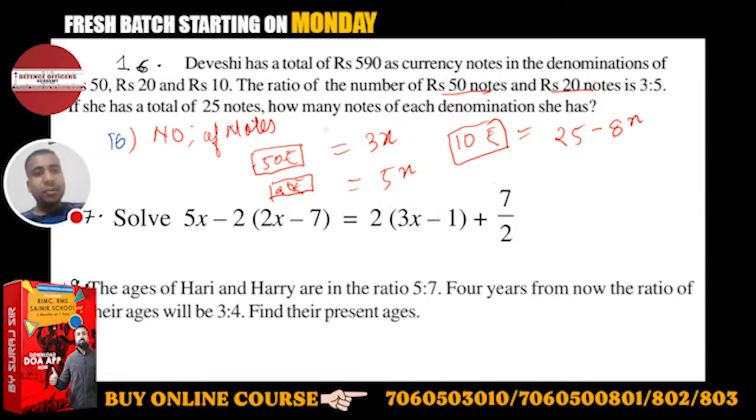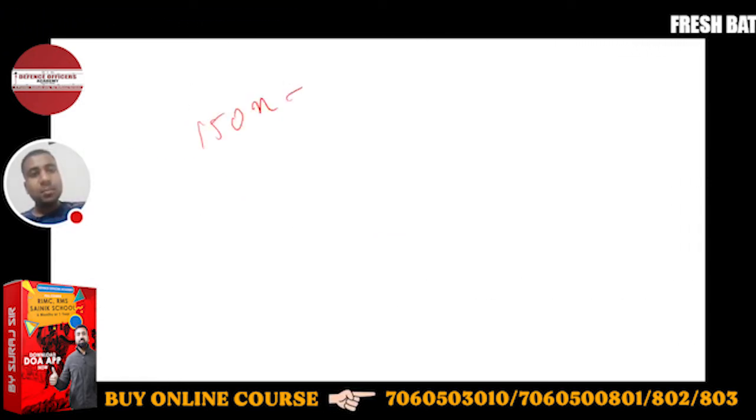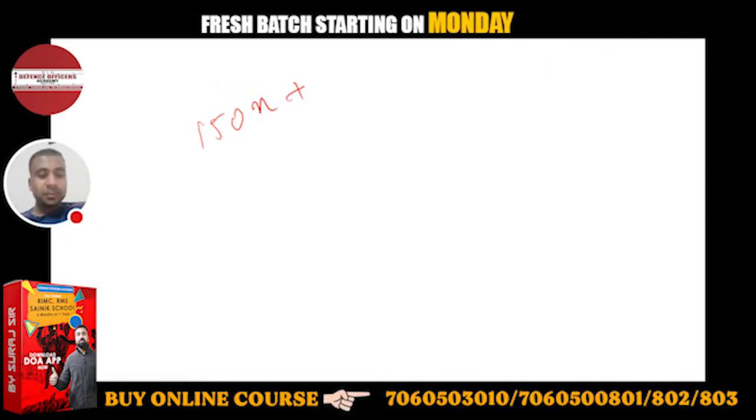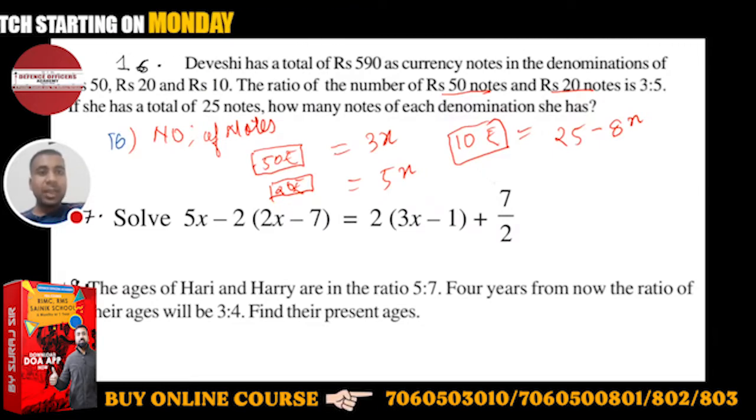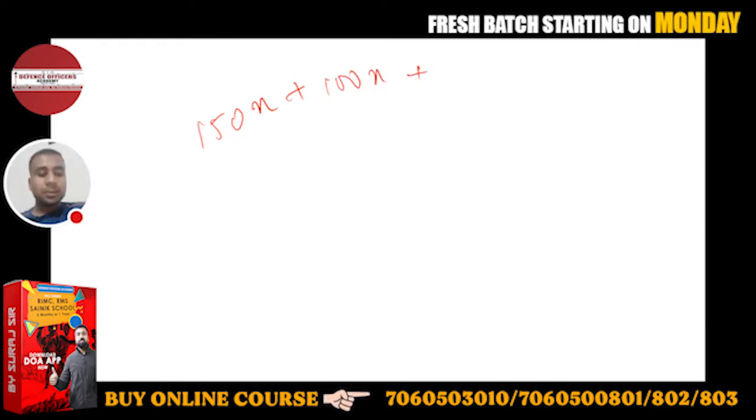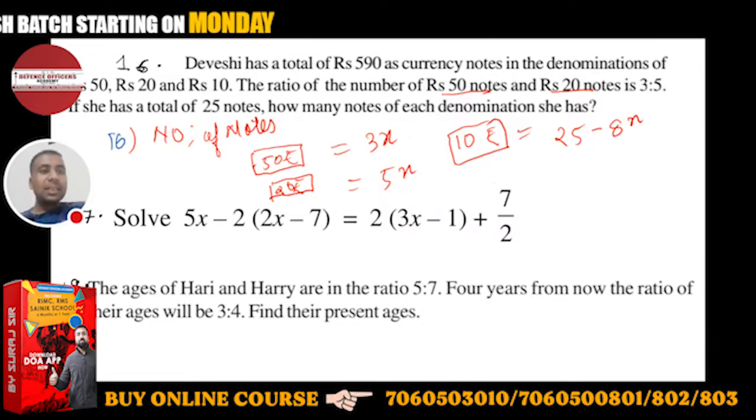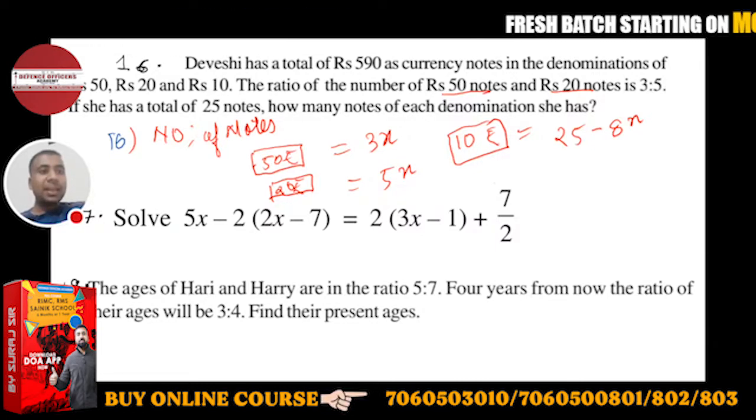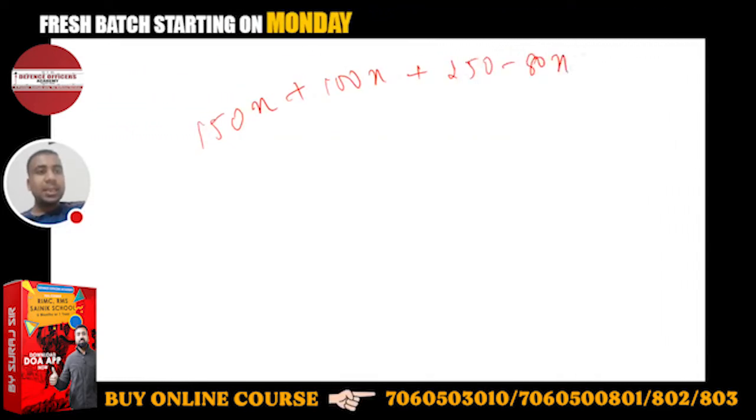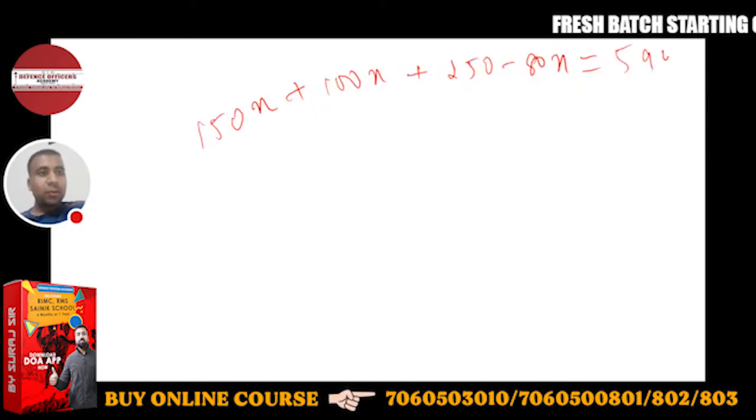So this will be 50 into 3x will be 150x, plus 5x into 20 will be 100x, plus 25 minus 8x into 10 will be 250 minus 80x. 250 minus 80x is equal to total 590 rupees, is equal to 590. We have to solve this.